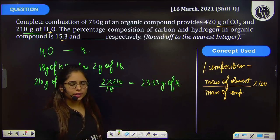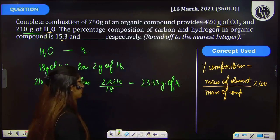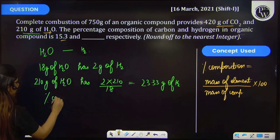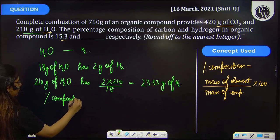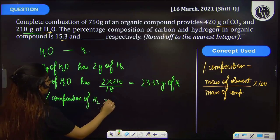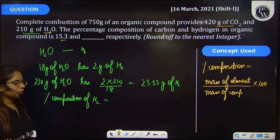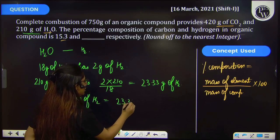Further, you have to calculate the percentage composition using this formula. Percentage composition of hydrogen in this organic compound will be 23.33